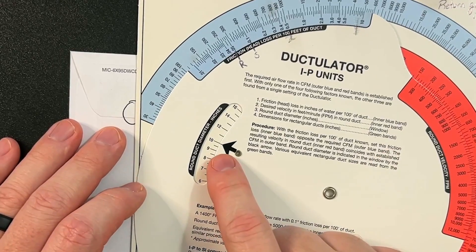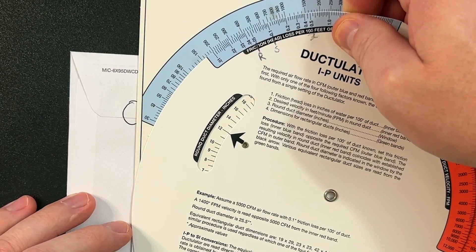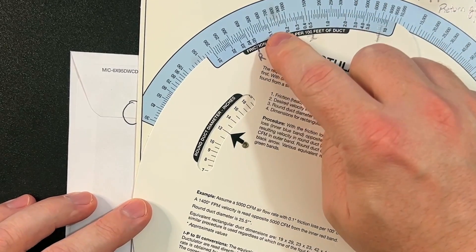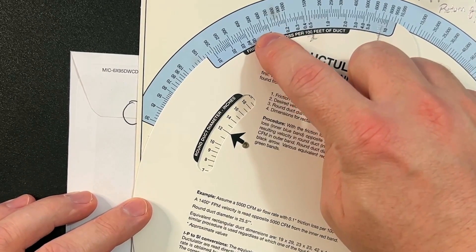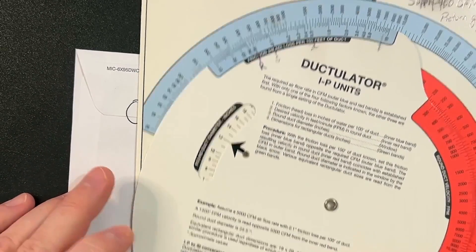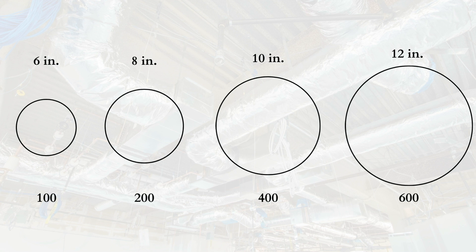Finally, if we go all the way up to a twelve inch, we're going to be in the neighborhood of just under 700 CFMs. If you're at 0.08 you're going to be around 600. So back to our chart: a six is 100 CFMs, an eight is 200, a ten is 400, and a twelve is six times higher than that six inch.